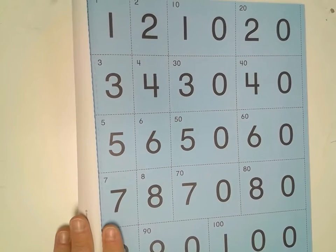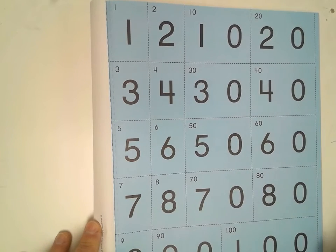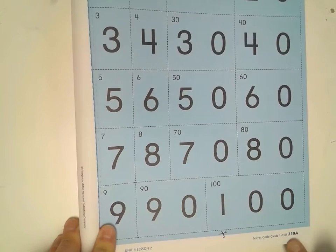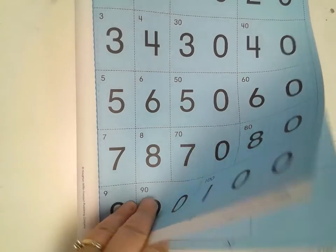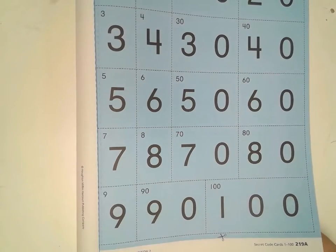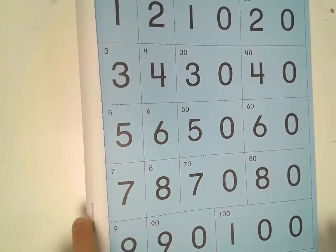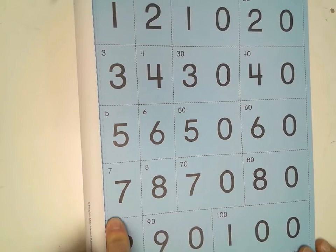Alright. So hopefully in the instructions we said cut out the secret code cards before you watch the video. If you have not done so yet, please do so. You'll find them on page 219 A through D and you'll see that there's two separate pages. You're going to want to cut them out on the dotted line. Don't cut both at the same time because they don't match. If you've cut those out then you can continue this video. If not, go ahead and stop it and do that and come on back.